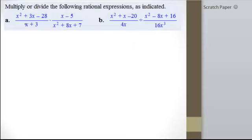In this numerator, we have factors of negative 28 that add up to 3. That'll be a 4 and a 7, where the 7 is positive. In the denominator, we just have x plus 3.